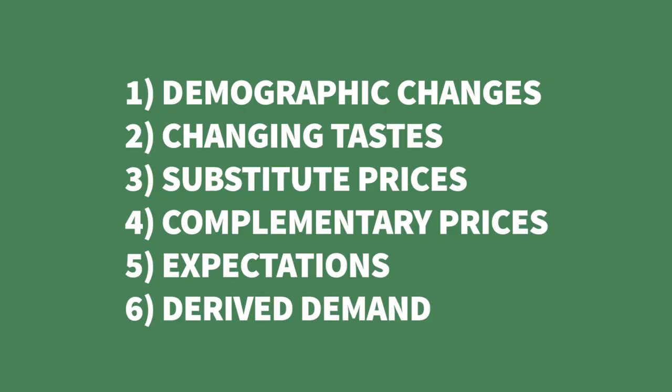Finally, what we call derived demand: the demand for an input product or resource is derived from the demand for what that resource is used to produce. Take housing — suppose housing is booming. What will happen to the demand for 2x4s used to build houses? Demand for 2x4s will increase. So those are some of the kinds of things that affect demand and can change it — that is, shift the whole curve.